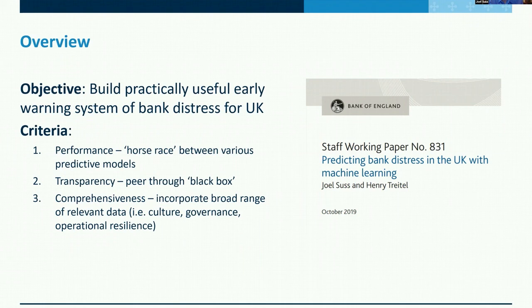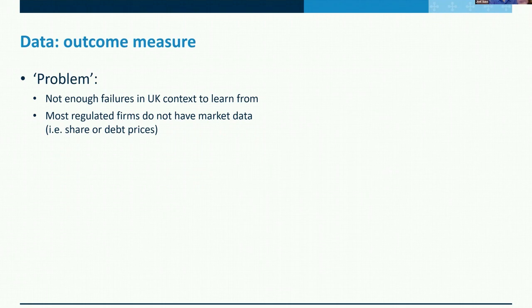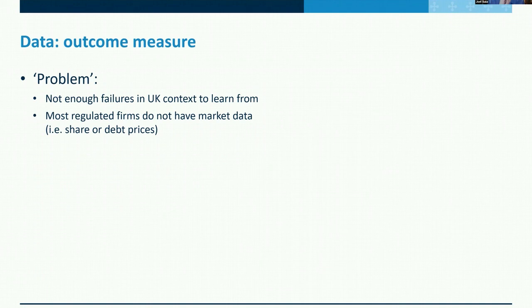Now we have a challenge for building an early warning system in the UK context: there aren't enough bank failures to construct a model in recent years. We also regulate a lot of different types of firms — small to large, credit unions, building societies, universal banks — and a lot of these firms don't have market data, they're not publicly listed and don't have debt instruments traded in the market. So we can't use market data to construct an outcome measure.